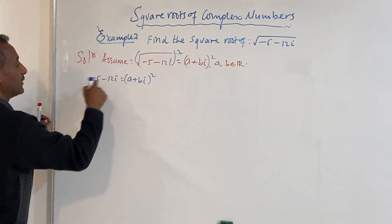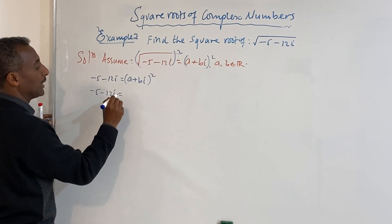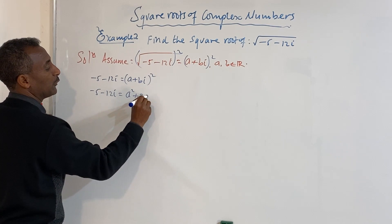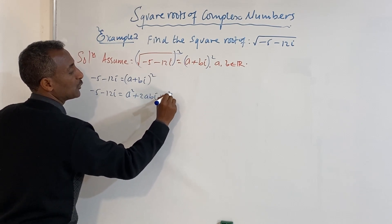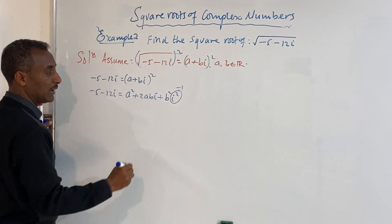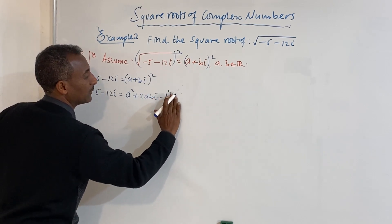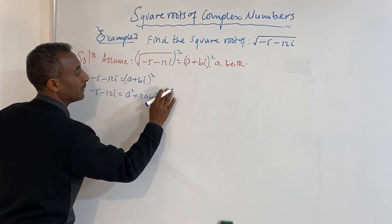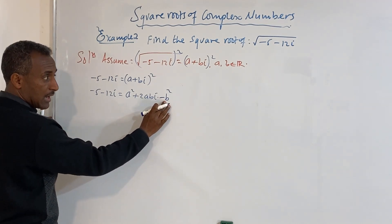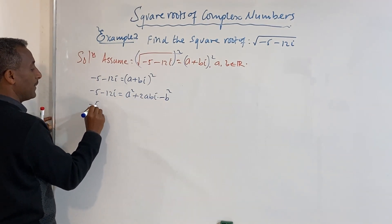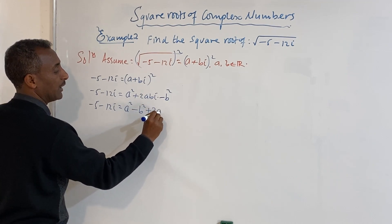Squaring both sides: minus 5 minus 12i is equal to (a + bi) squared, which expands to a squared plus twice of a times bi plus b squared times i squared. Since i squared equals minus 1, this becomes a squared minus b squared plus 2abi.